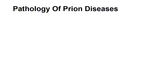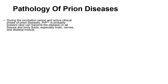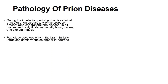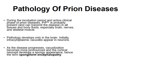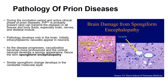During the incubation period and active clinical phase of prion disease, PRPSC is present in all tissues and body fluids — especially in the brain, nerves, and skeletal muscles. The pathology develops typically in the brain with characteristic intracytoplasmic vacuoles. As the disease progresses, vacuolization becomes more conspicuous in the form of spongiform encephalopathy. Similar spongiform changes can also be seen in the cerebellum, with characteristic vacuolization in the neurons and neuropil.